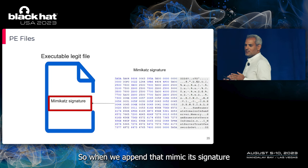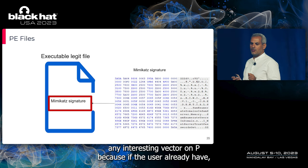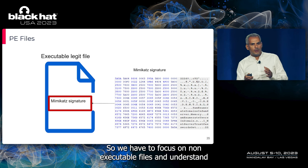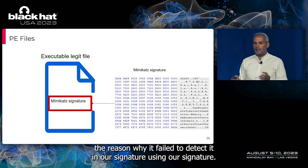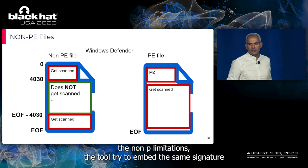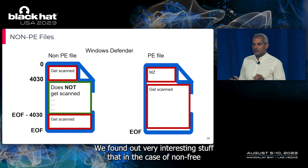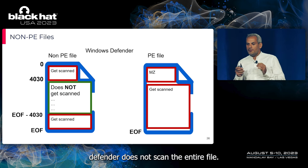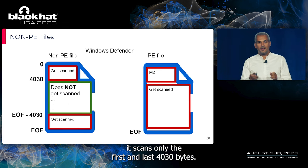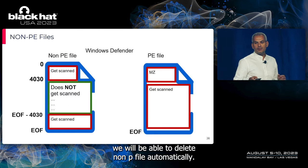When we appended Mimikatz's signature to the middle of a legitimate portable executable file, it worked. The problem is that if the user already has privilege to write to a PE, they can probably delete it anyway. So we had to focus on non-executable files and understand why detection failed there. We developed an additional tool to understand non-PE limitations. We found that for non-PE files, Defender does not scan the entire file — probably for efficiency. It scans only the first and last 4,030 bytes. This means we must append our signature to those sections.